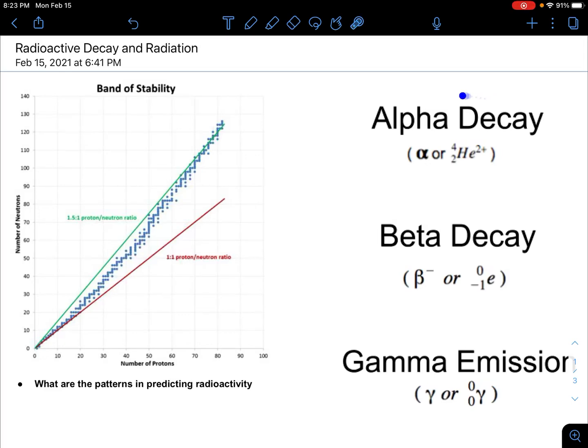In a previous video I went over alpha decay and how that's one of the possibilities of radioactive decay or radiation that can be given off by an unstable nuclei, which is called a radioisotope. In this video I'm going to go through beta decay.